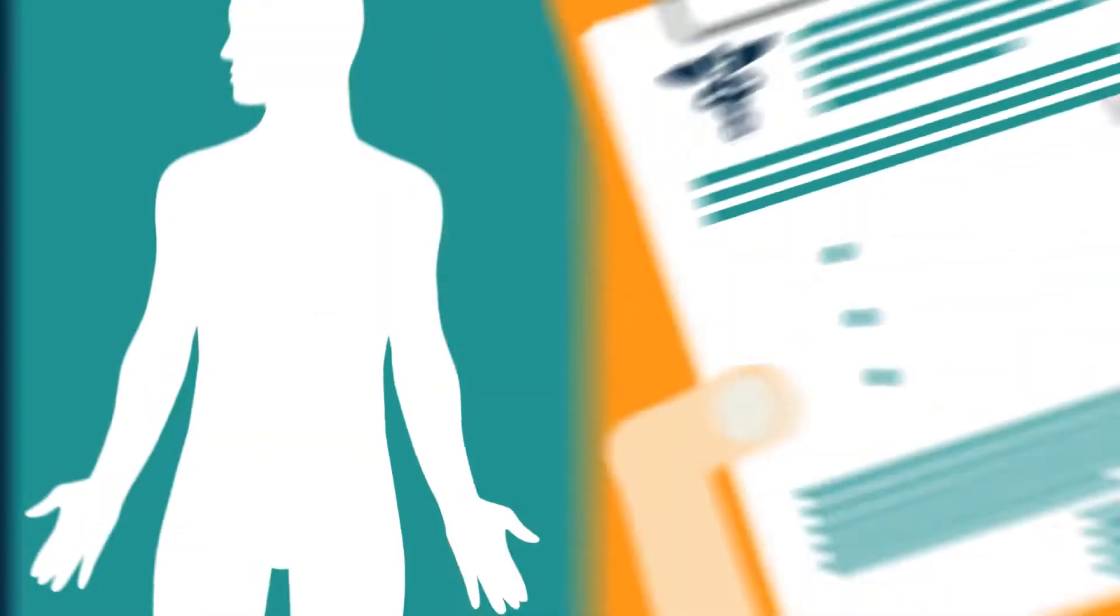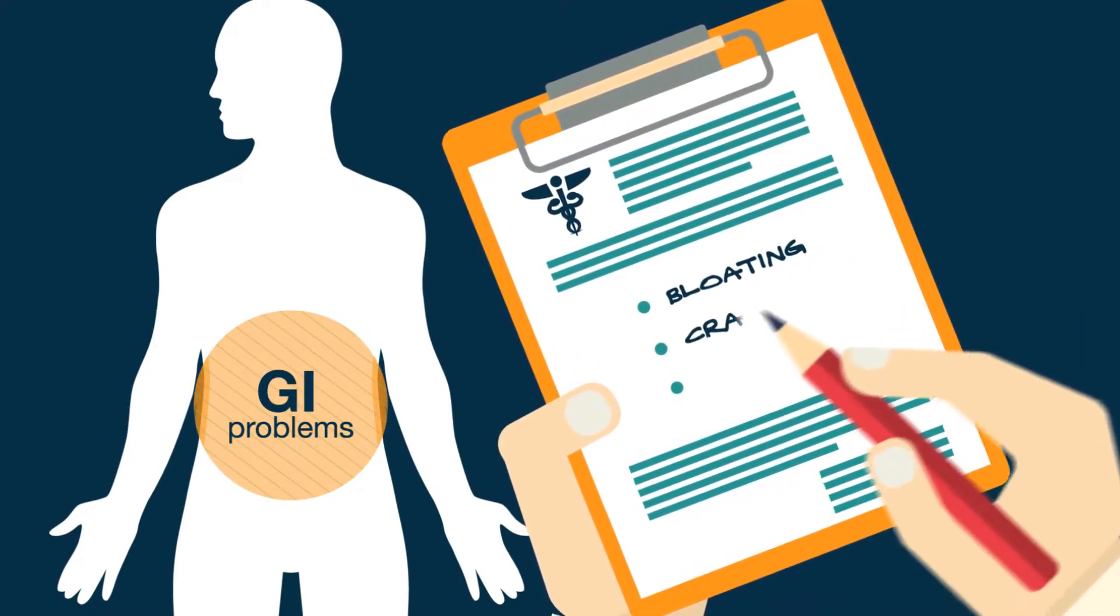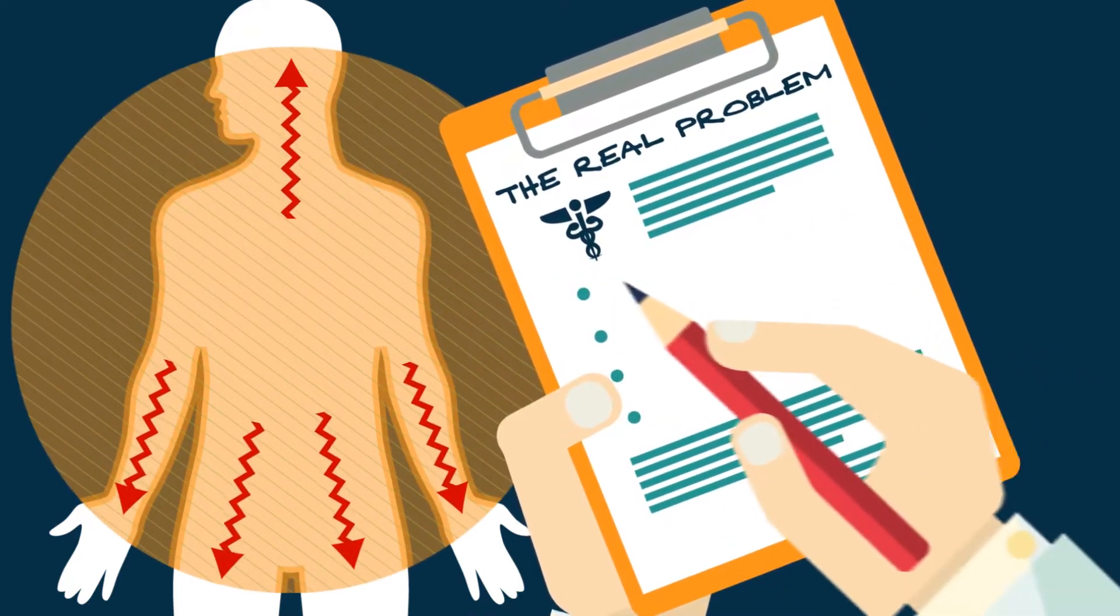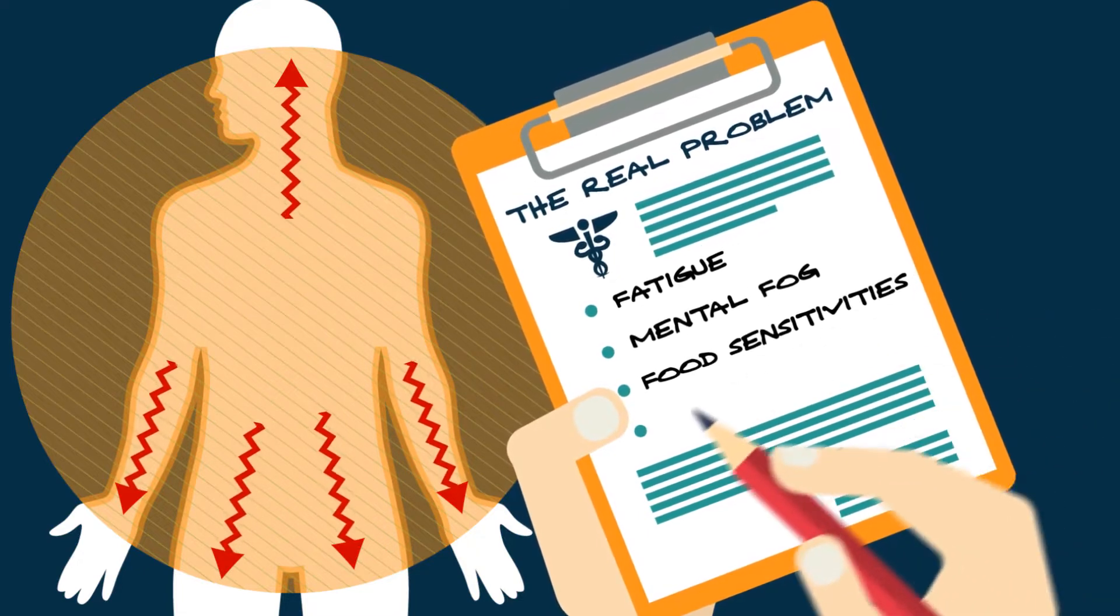Here's the real problem with poor digestion. The negative effects go far beyond the bloating, cramping, and gas that a patient might feel. Undigested food particles are immunogenic and have been linked to the development of food sensitivities and autoimmunity.